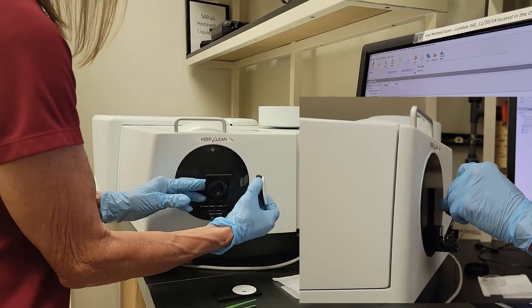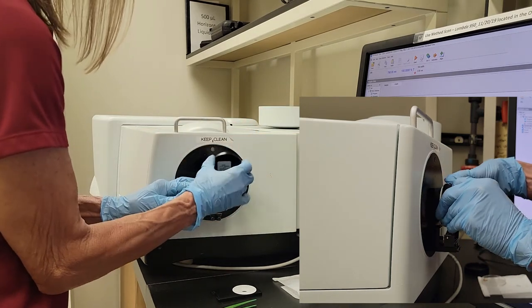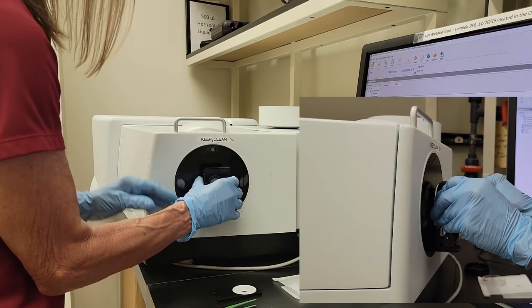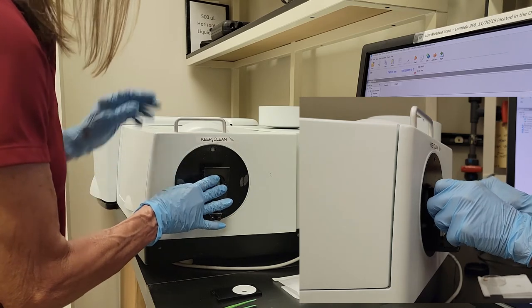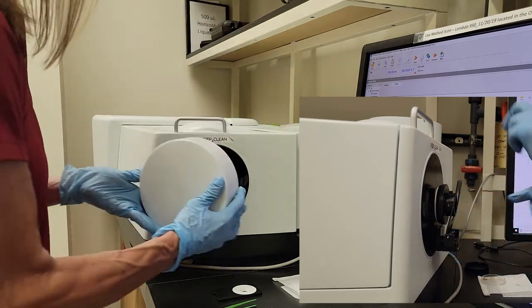Carefully place the reference on the shim, checking it is sitting flush. Put the cover on and measure the auto zero.